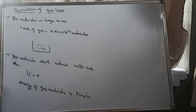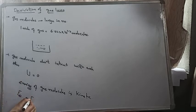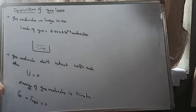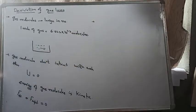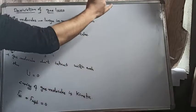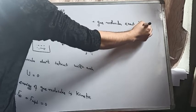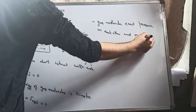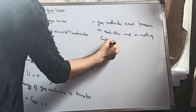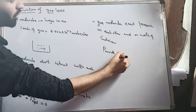We assume that force of attraction or force of repulsion between the gas molecules do not exist. The third point from kinetic theory of gases is that gas molecules exert pressure on each other and on the walls of the container. The pressure inside the gas is non-zero.